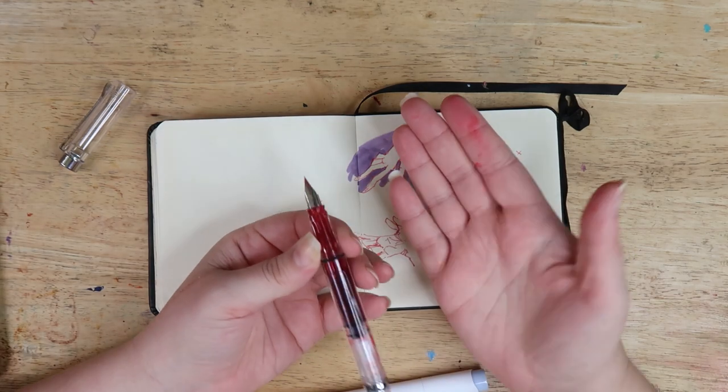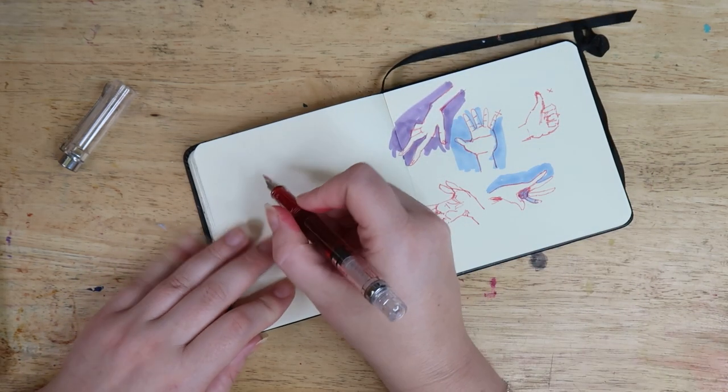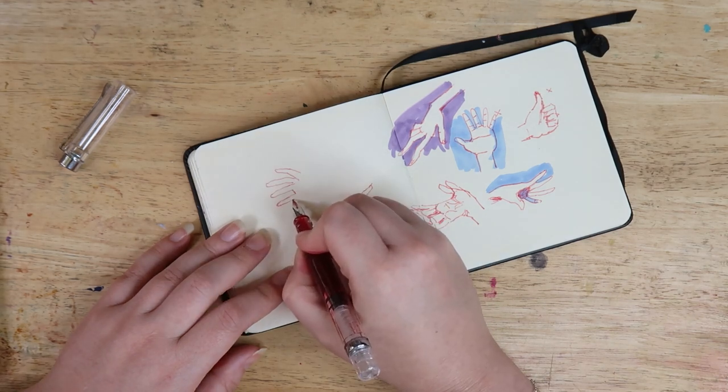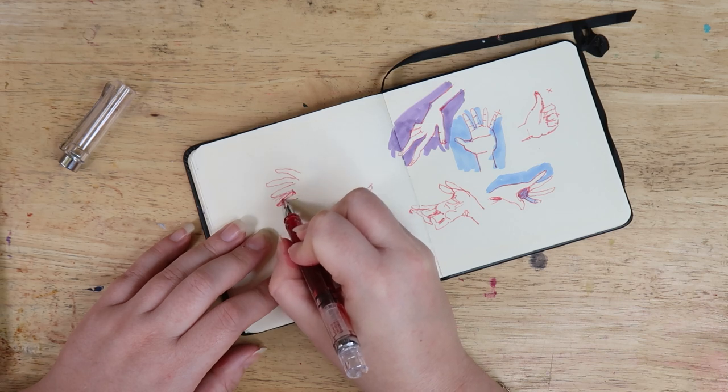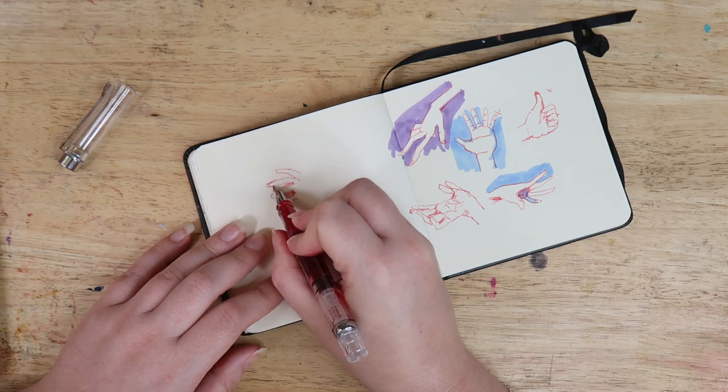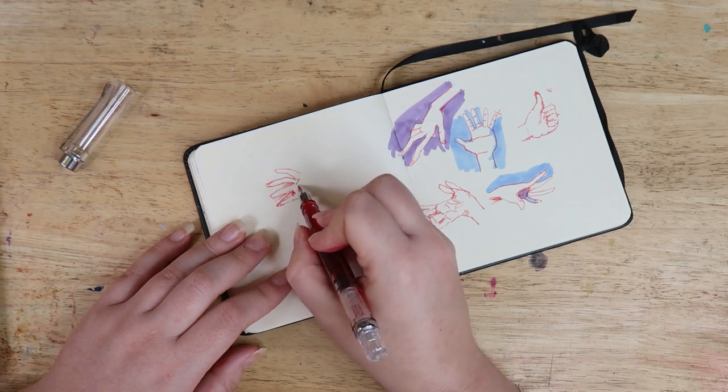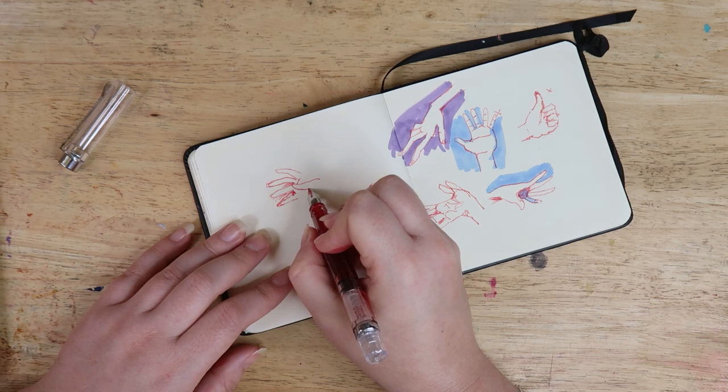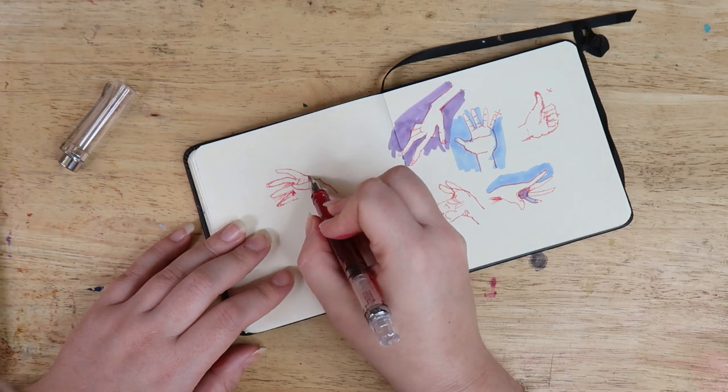I managed to touch the nib with my hands. That's why my hands are a bit red. My life drawing teacher used to tell us to look at negative space when you're struggling with life drawing. So that's what I'm trying to do here. But this is fine, it's just a sketch.